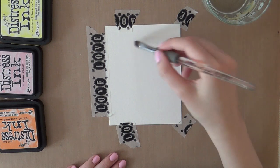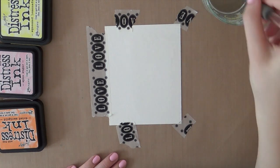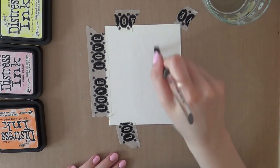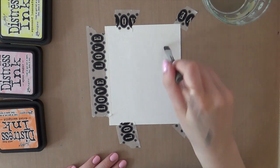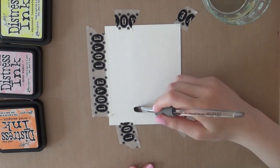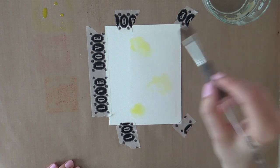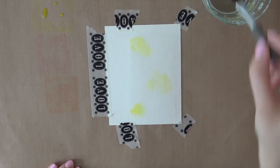After I finish Copic coloring, I am going to be doing some watercoloring. I am using my favorite watercolor paper by Canson and I am just going to add a lot of water to the area where I want the color to be.